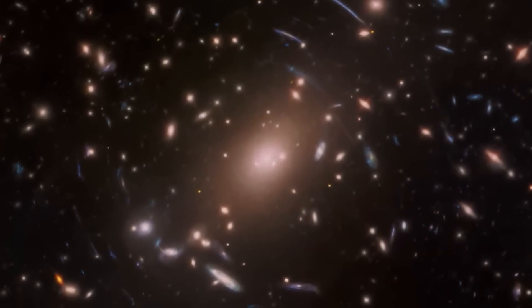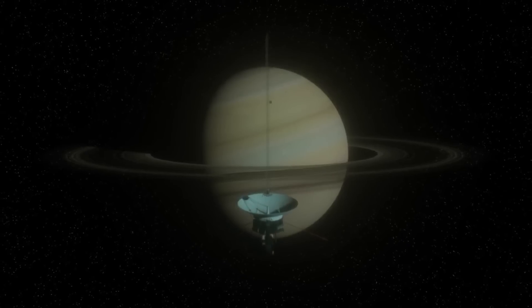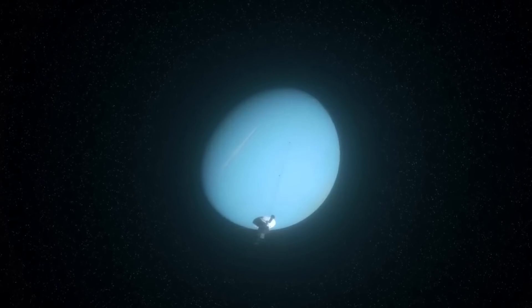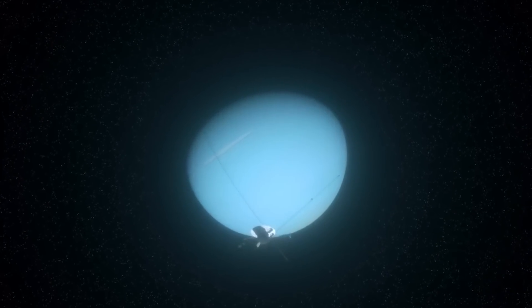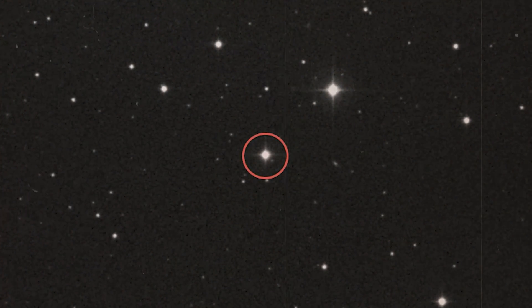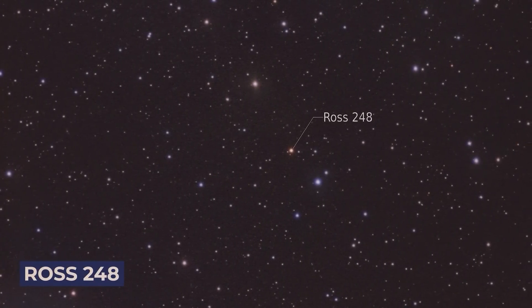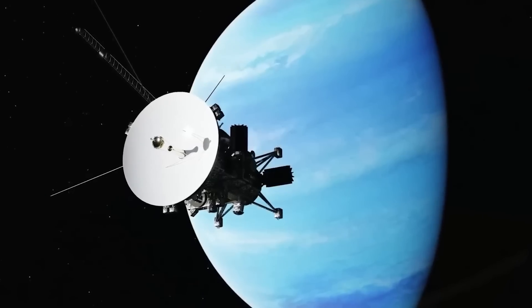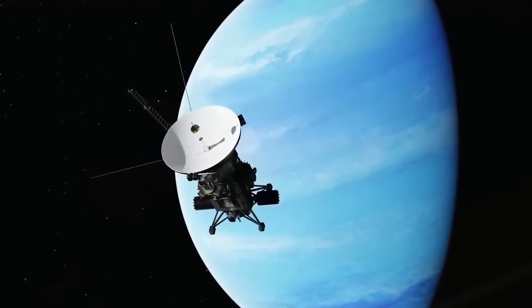While the legendary Voyager mission is nearing its end, the twin probes are only beginning their extraordinary cosmic voyages. In approximately 40,000 years, Voyager 1 is expected to drift towards AC plus 793888, a star located in the Camelopardalis constellation. On the other hand, Voyager 2 will pass 1.7 light-years away from the star Ross 248. These remarkable and resilient probes are likely to outlast even our own planet as they continue their solitary travels across the vast expanse of the Milky Way.